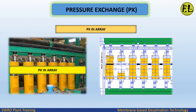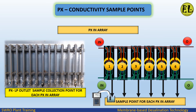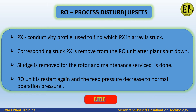A pressure exchanger PX conductivity profile is performed to verify which PX units have stopped rotating in the PX arrays. Water samples are collected at each PXLP outlet line in the PX array. The PXLP outlet with conductivity close to seawater intake conductivity is identified — the PX conductivity profile is used to find which PX in the array is stuck.